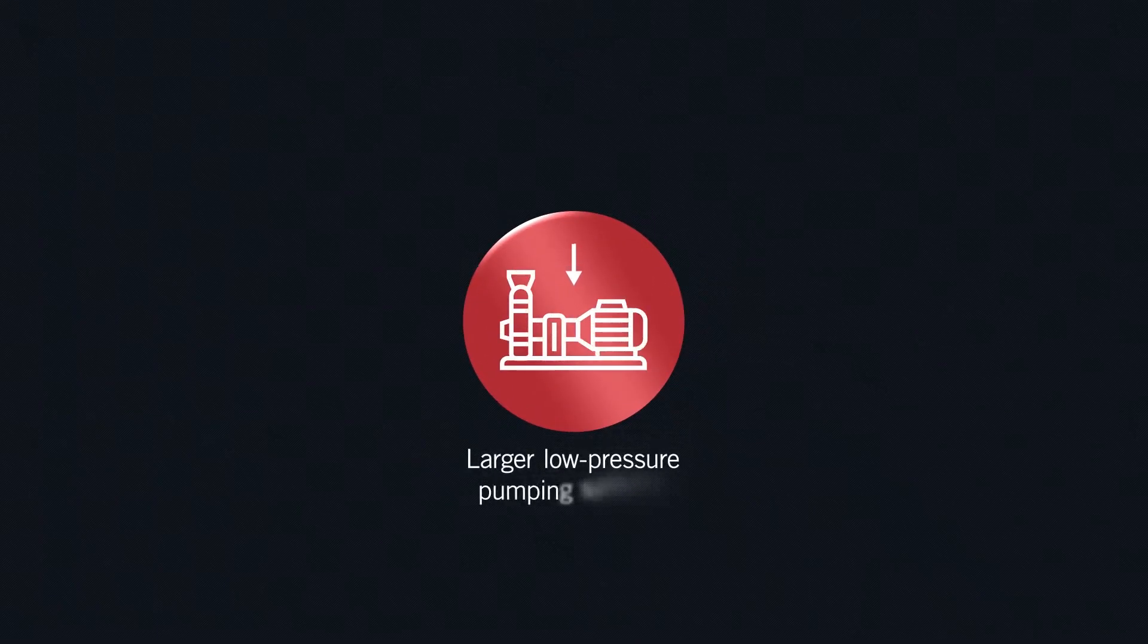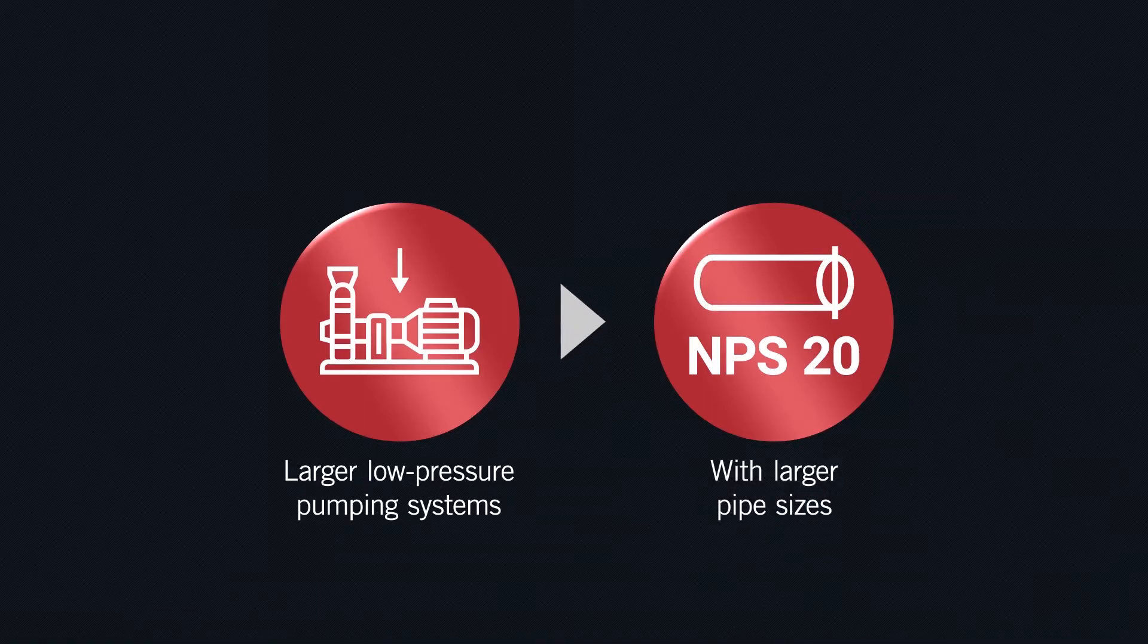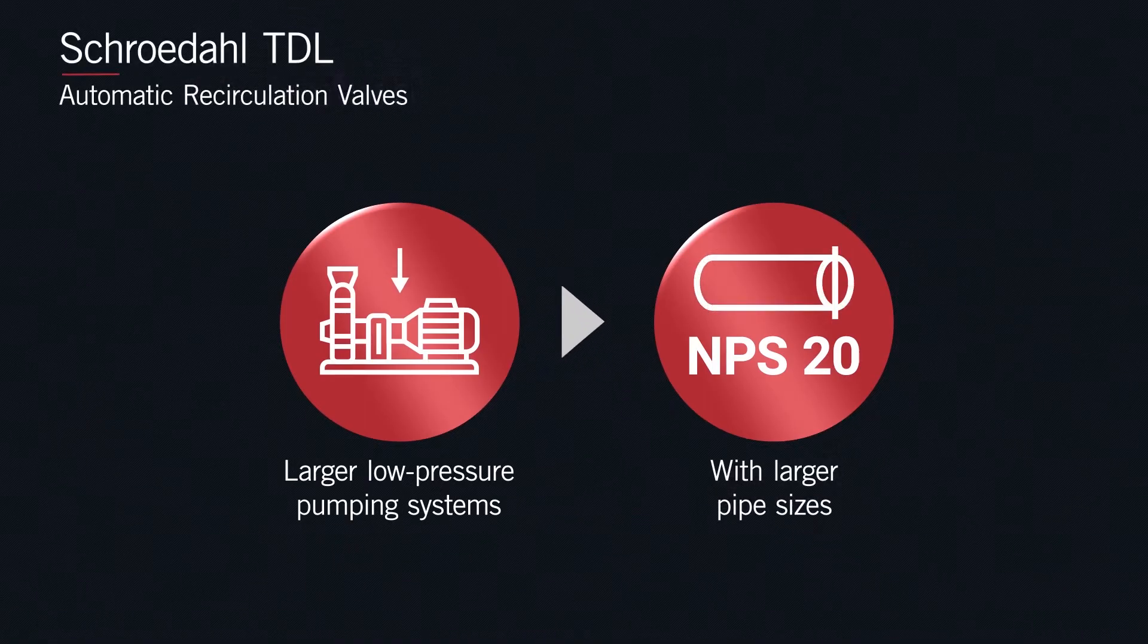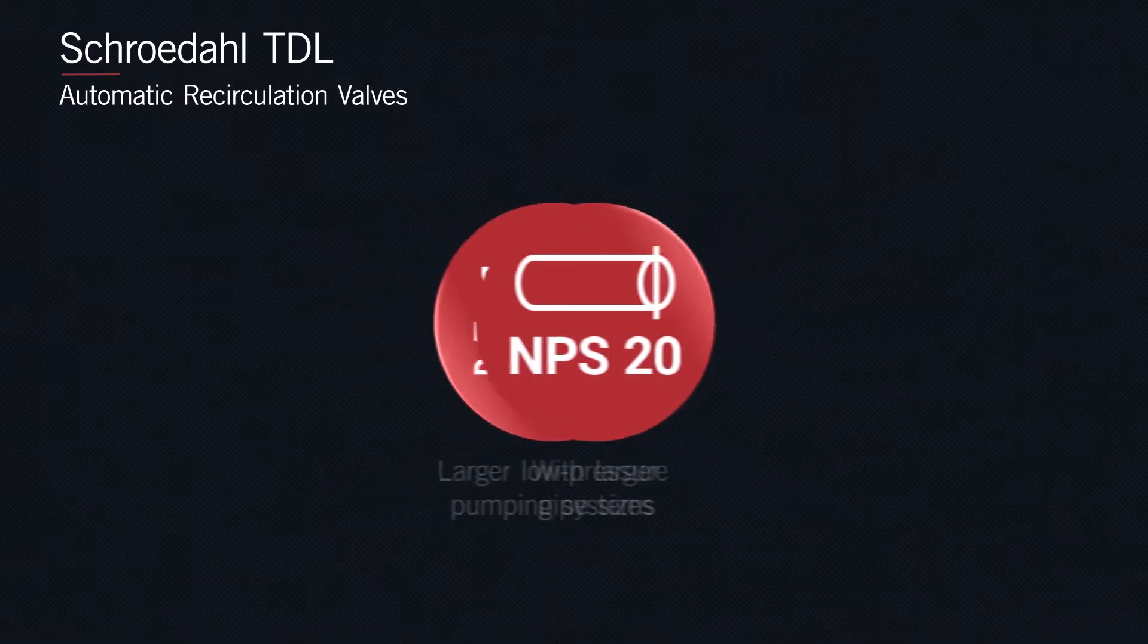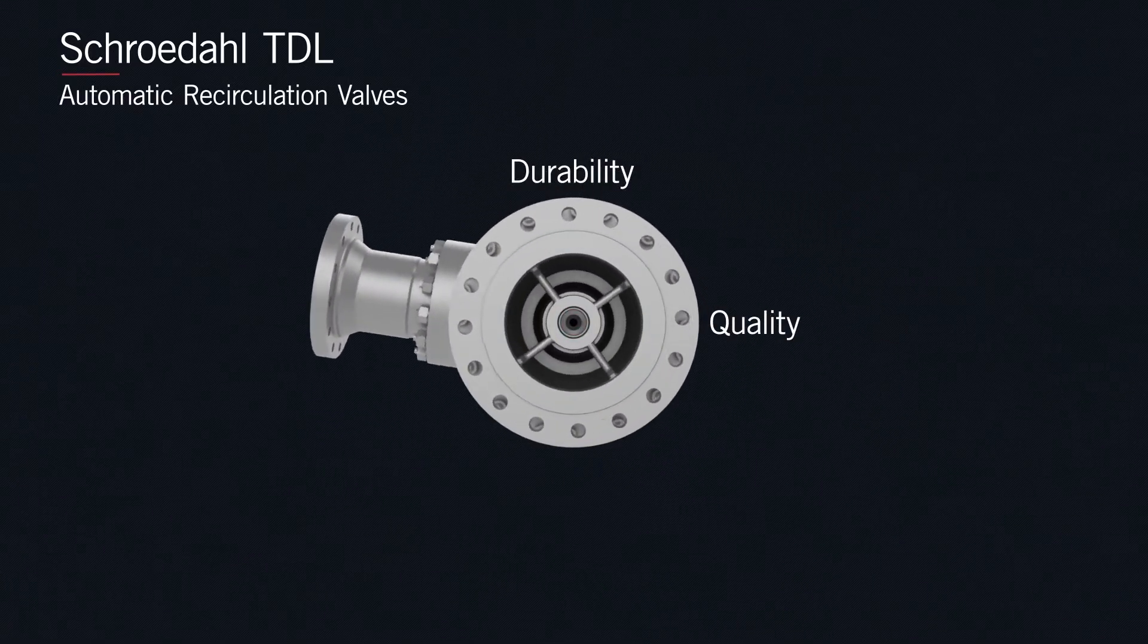Specially engineered for larger low pressure pumping systems with nominal pipe size of up to NPS 20, the Schrodal TDL automatic recirculation valves by Circor redefine quality, durability, and reliability.